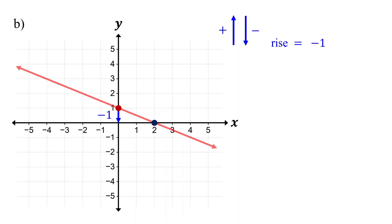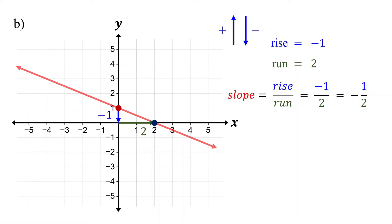Then, find the run. From where you left off, move to the right two units, so the run is two. Finally, divide the rise by the run to find the slope. Place the negative sign in front of the fraction. Notice that the slope is negative, meaning the line goes down as you move from left to right.